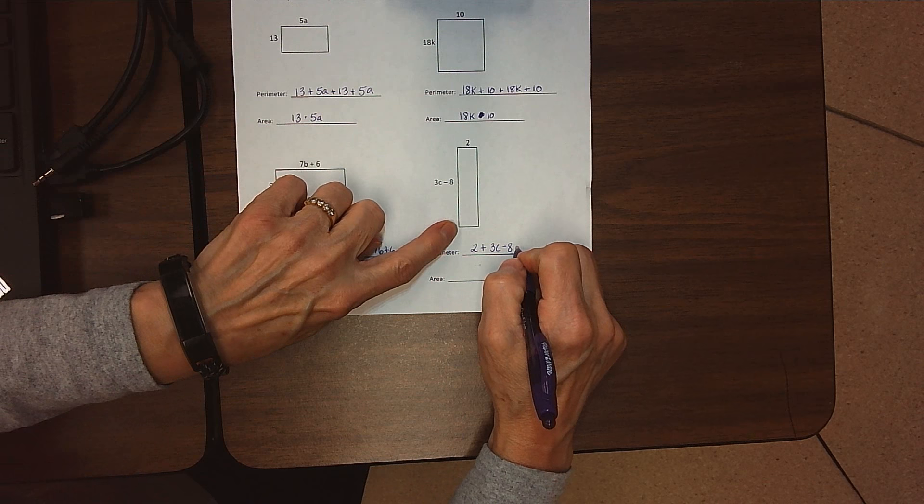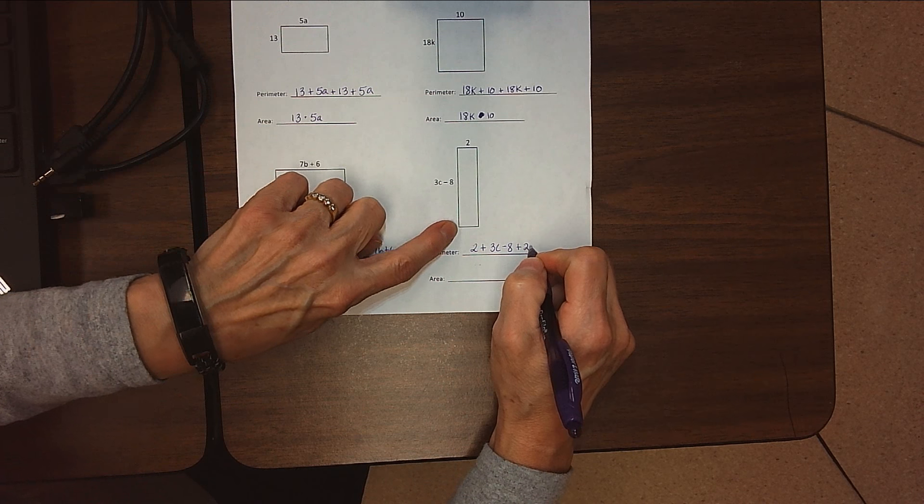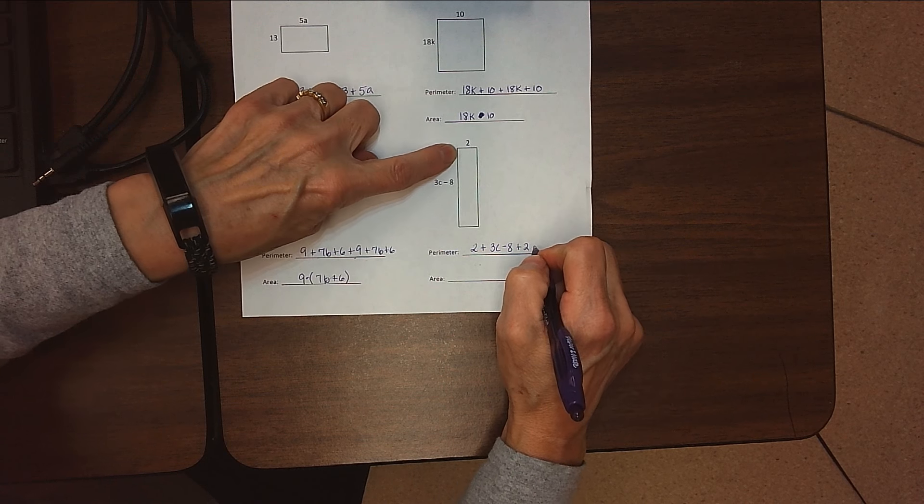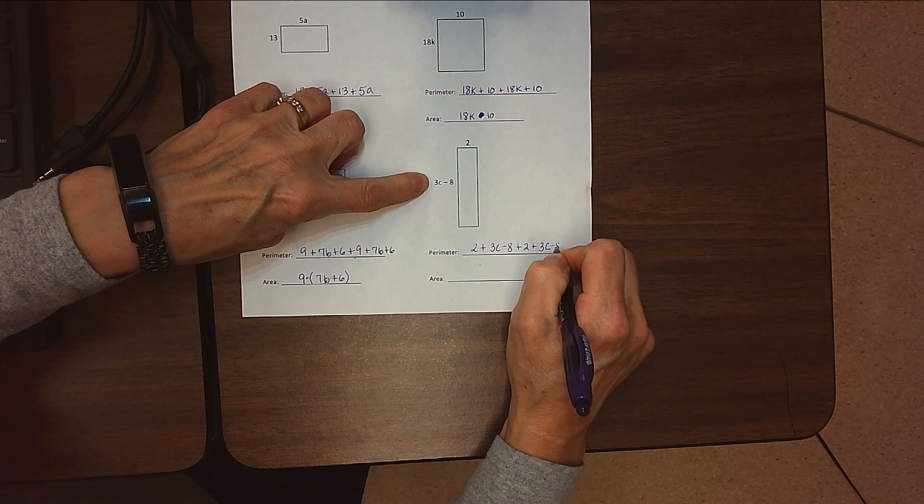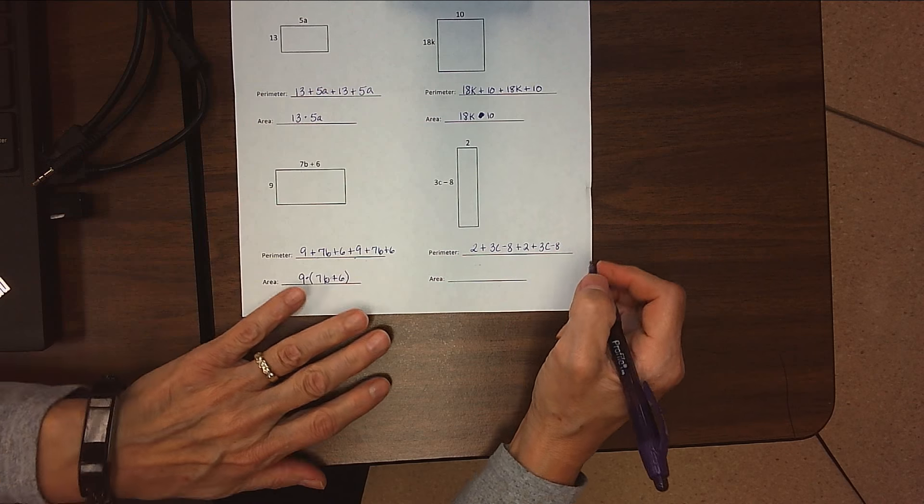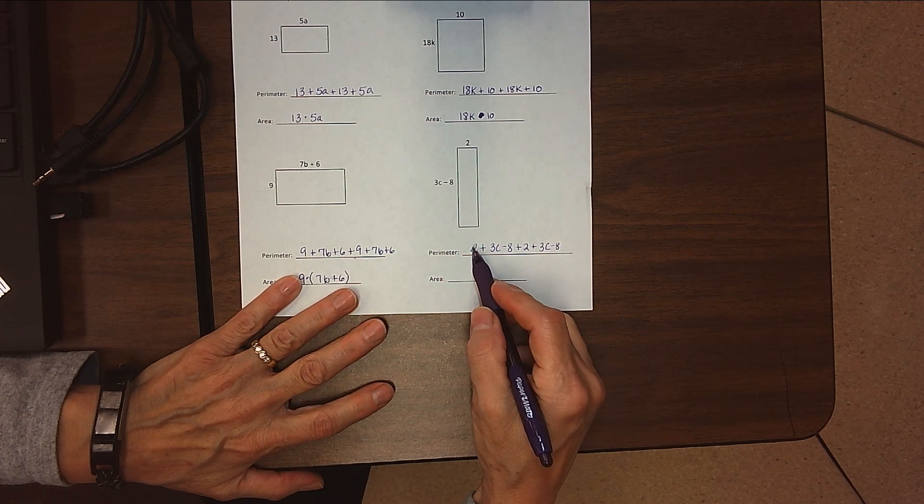Now I need to add in this side, plus 2 again because it's equal to its opposite side, and then plus 3c minus 8 for this side. How did you do? Check yours—it may not be in this order.